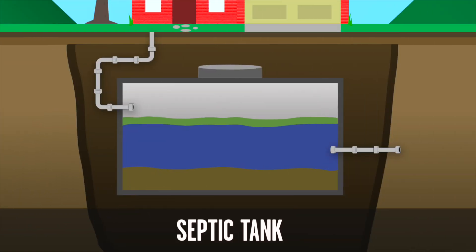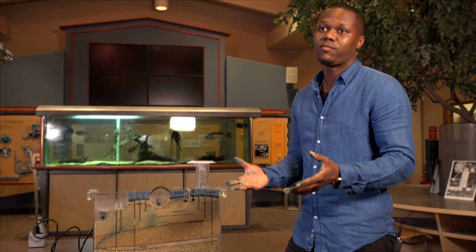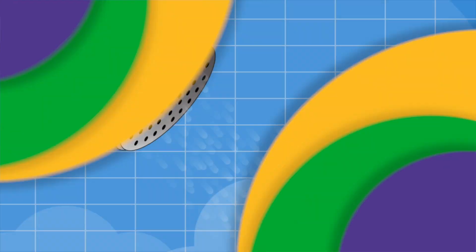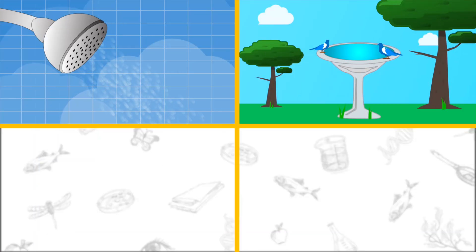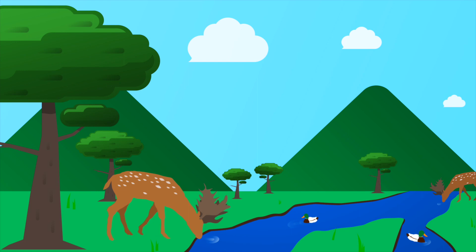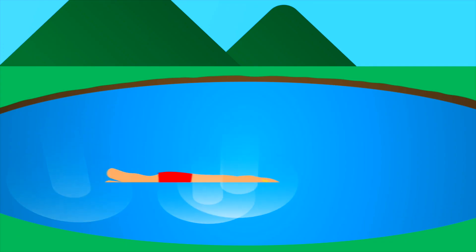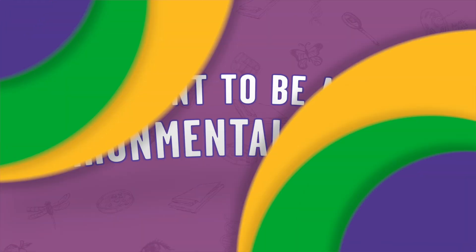So it's very important that we do everything to prevent seepage into the groundwater to ensure that we have good, clean, safe water. We all use this water to shower. Birds use this water to drink from. Animals come to drink water from a stream. We swim in these lakes.